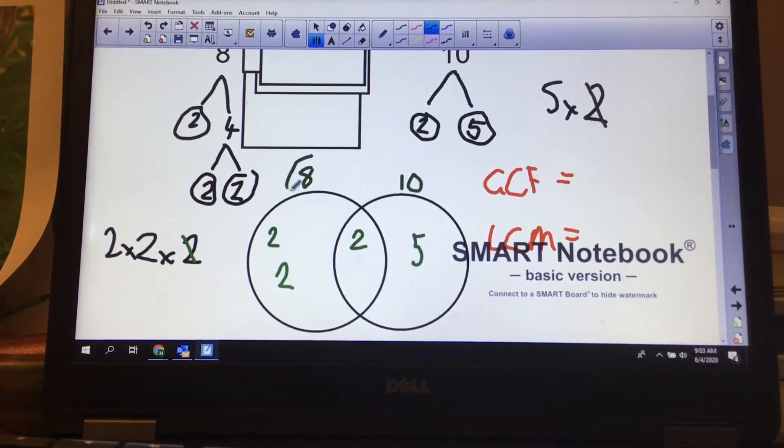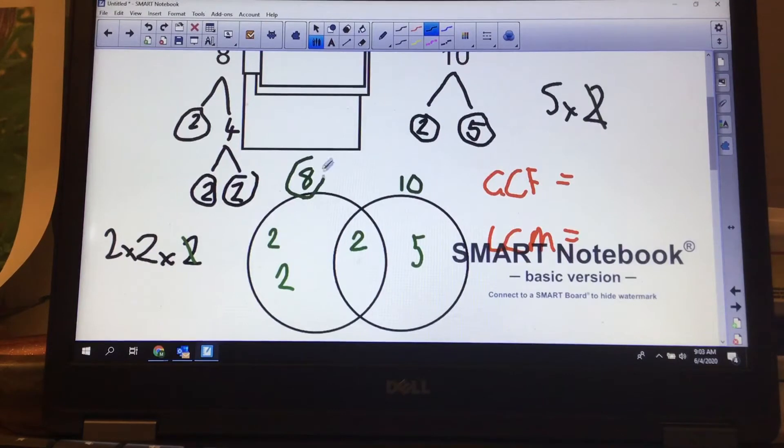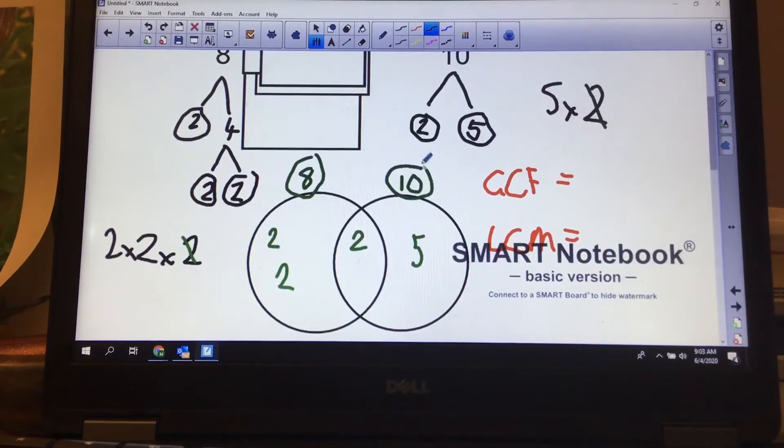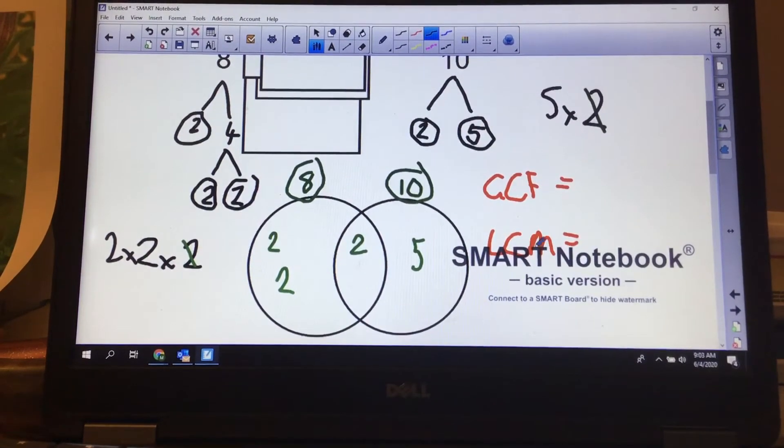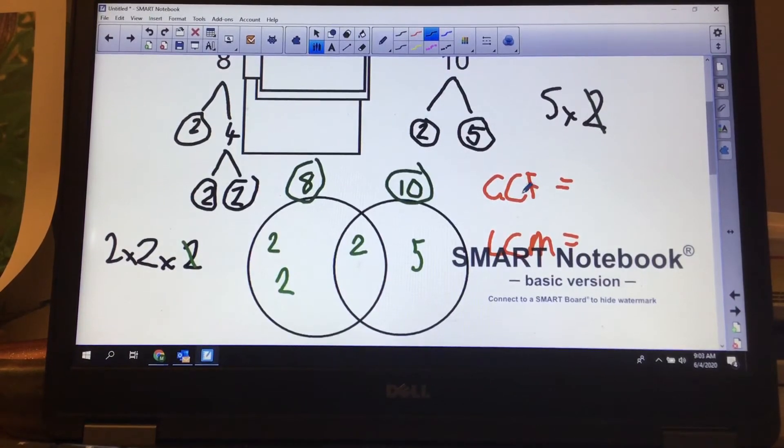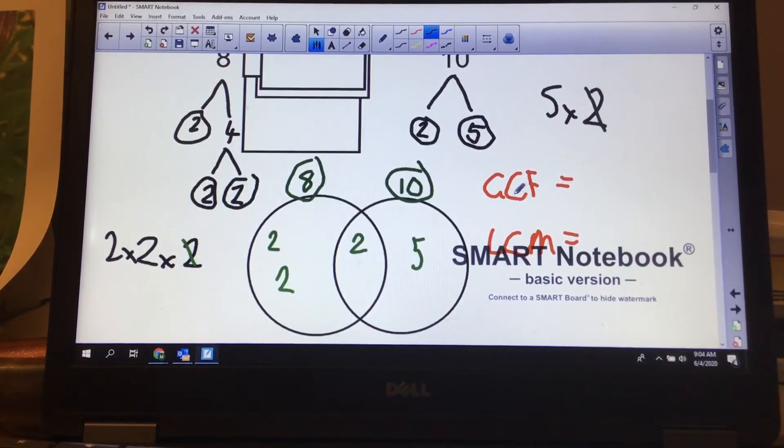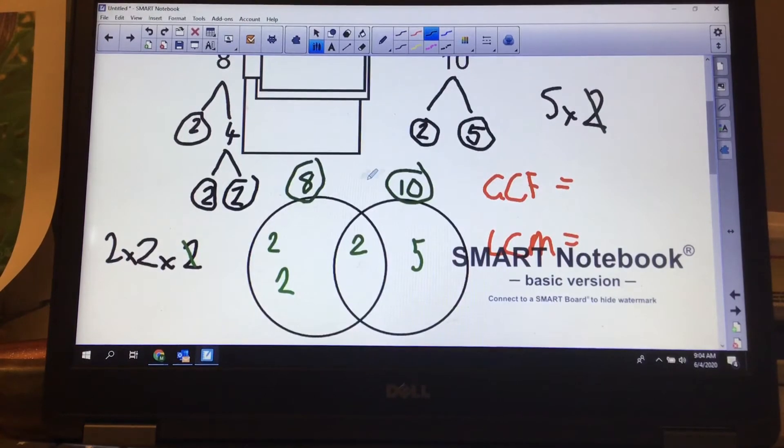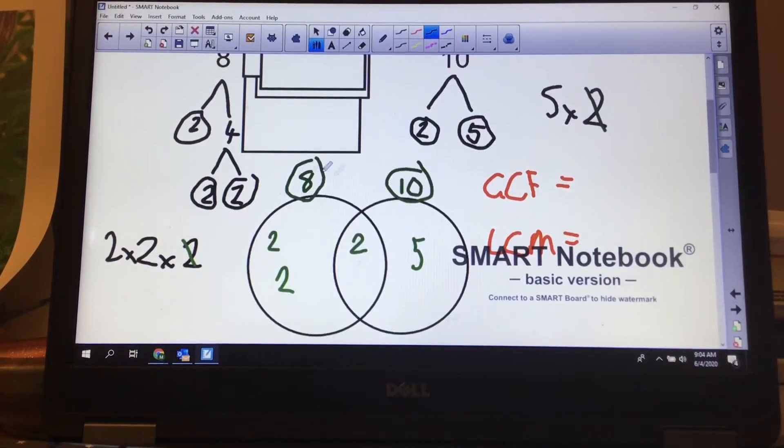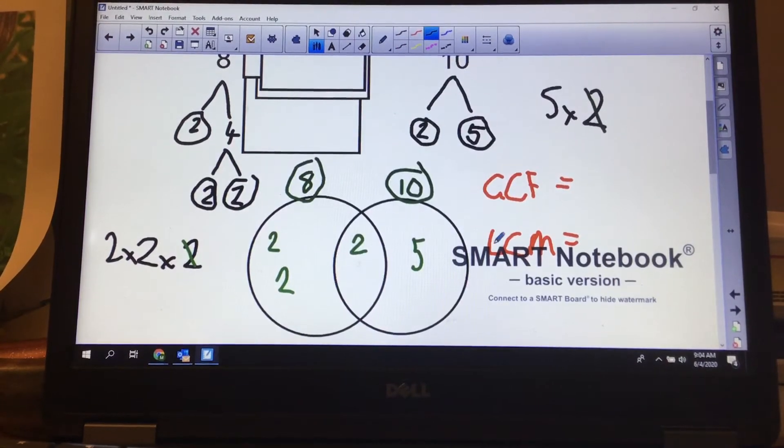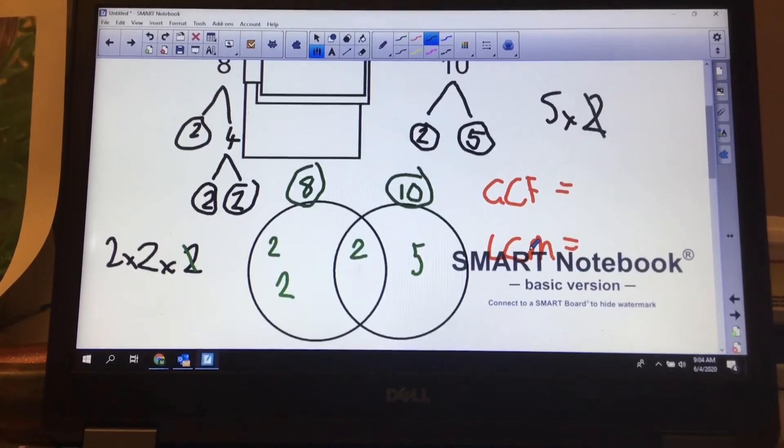So when I do my greatest common factor and least common multiple, the easiest way to do it, it's easy to mix them up. But if you realize that factors are smaller than the numbers, so my greatest common factor can't be bigger than 8. My least common multiple, because multiples get bigger, my least common multiple can't be smaller than these numbers.